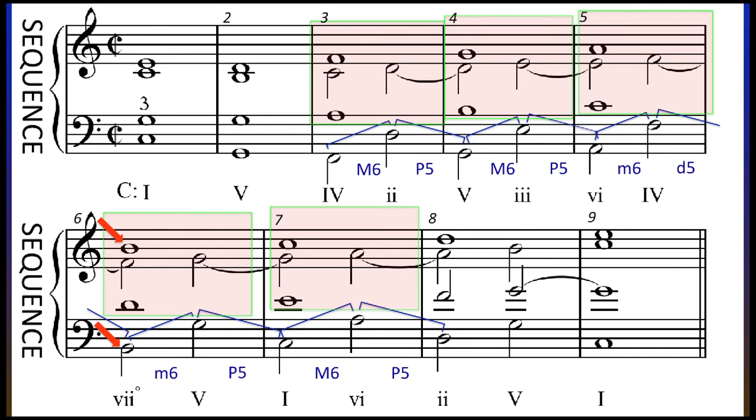Usually we would try to avoid doubling the leading tone in outer voices, and especially when there is a bass leap on the downbeat in bar six. However, the sequential pattern allows us to make an exception. Think about it. Maintaining the logical pattern of the sequence takes precedence over the do-not-double-the-leading-tone rule. Do you hear it?